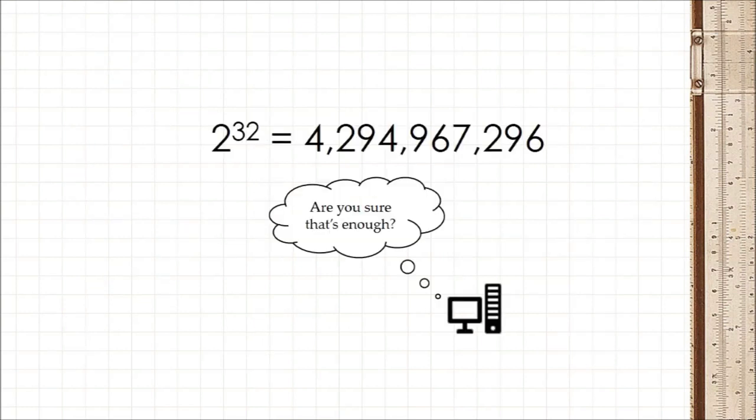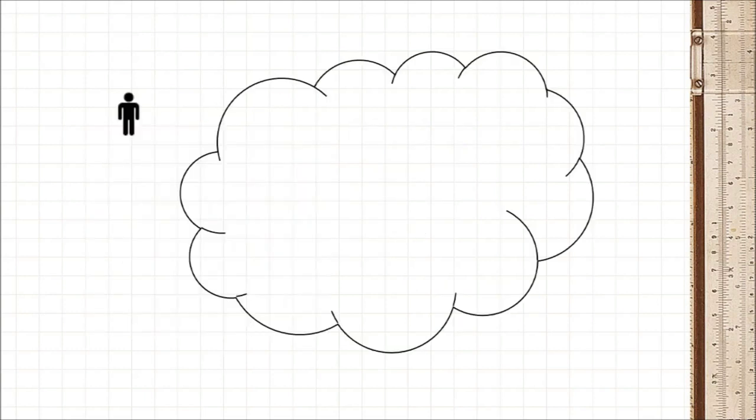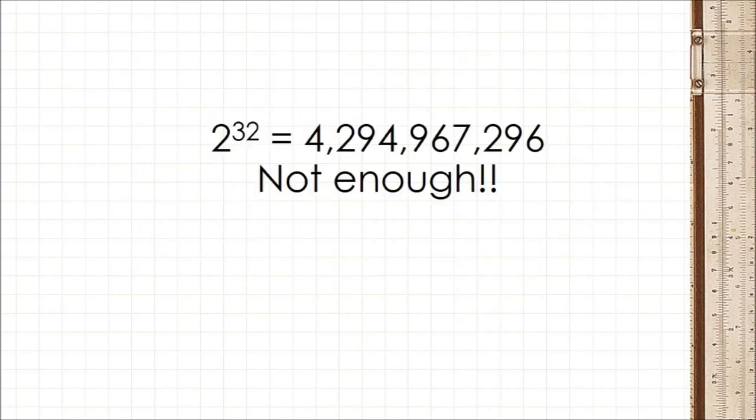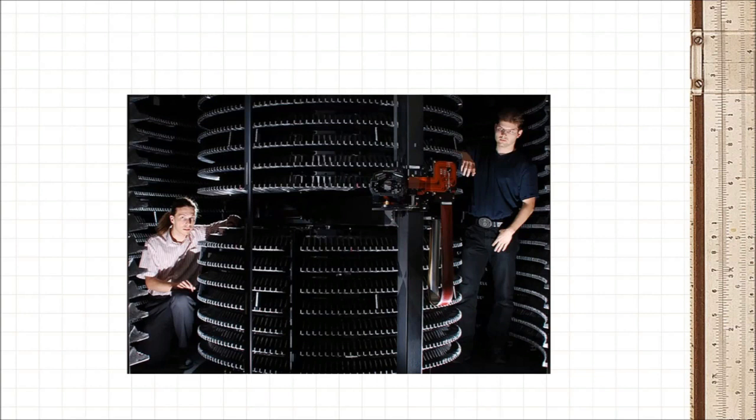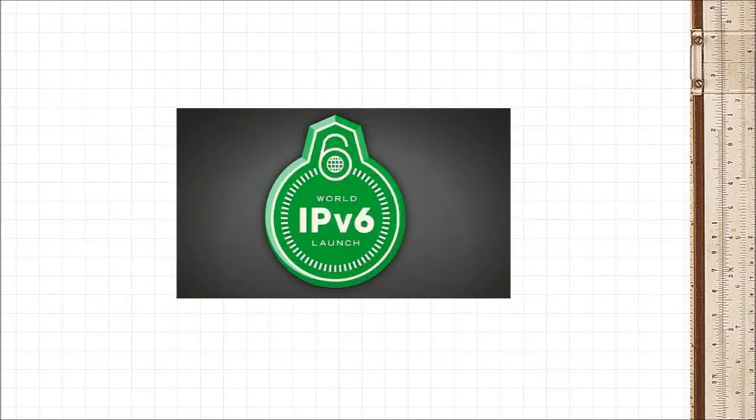Suddenly, 4 billion addresses didn't seem enough. With 7 billion people on the planet, and most people in the developed world having more than one computer on the Internet, 4 billion addresses were drying up. So computer engineers the world over had to address the problem by introducing a new version of the Internet Protocol, IPv6.